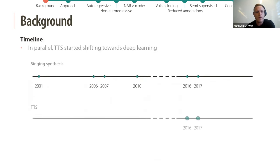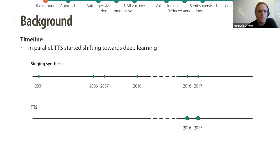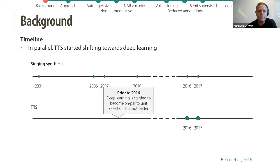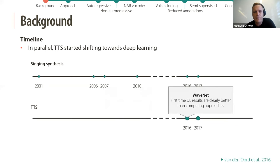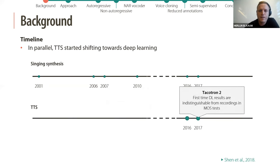In parallel to developments in singing synthesis, in the field of text-to-speech people started to shift towards deep learning. Prior to 2016 deep learning was being used but was only just becoming on par with concatenative synthesis. Then in 2016, WaveNet was released — the first time that deep learning results were clearly better than competing approaches — and one year later Tacotron 2 showed that results can be indistinguishable from recordings in listening tests.